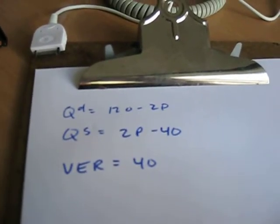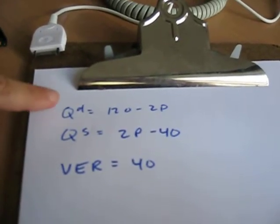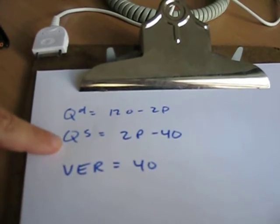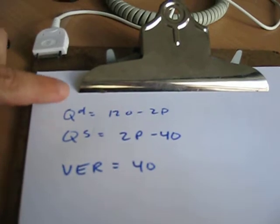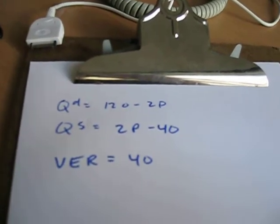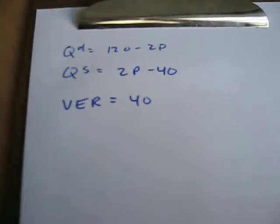All right, with the VER, it's a lot like a quota with one important difference. With a quota, you consume more than you make because you're importing. With the VER, you make more than you consume because you're exporting. That's the only thing to really keep track of that's different here.